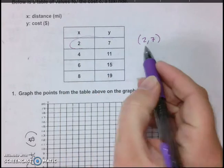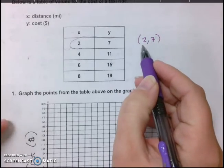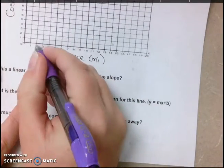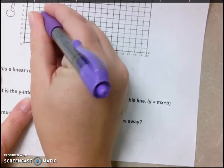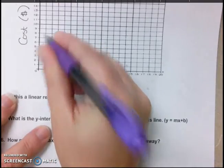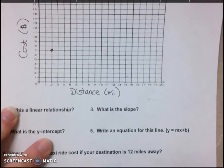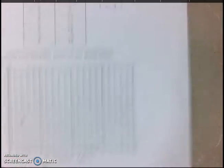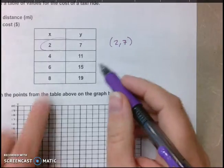So when you graph coordinate points, you go over 2, up 7. So I'm going to go over 2, up 7. It's really easy to get these backwards. Now I noticed on the quiz, a lot of people got this backwards. So if you get coordinate points backwards, use the table instead.